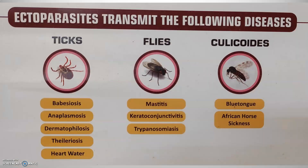Main ectoparasites transmit various diseases. Ticks mainly transmit babesiosis, anaplasmosis, dermatophilosis, theileriosis, and heartwater caused by Cowdria ruminantium. Flies transmit mastitis, keratoconjunctivitis, trypanosomiosis, and leishmaniosis. Culicoides midges transmit blue tongue disease and African horse sickness.